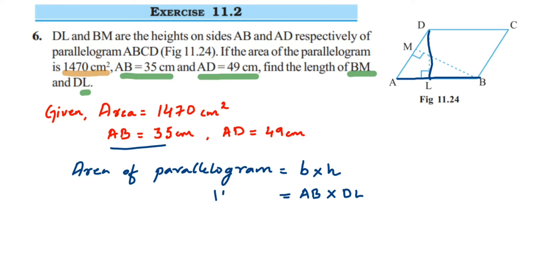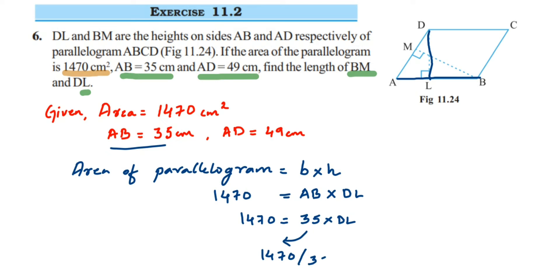Substituting the values: 1470 = AB × DL, which gives 1470 = 35 × DL. Transposing 35 to the other side — since it's multiplication, it becomes division — so DL = 1470 ÷ 35.